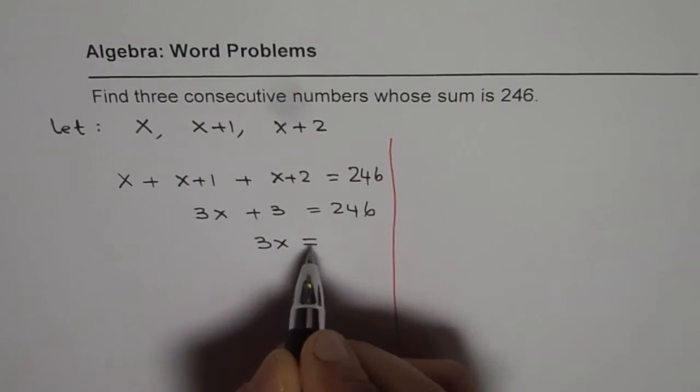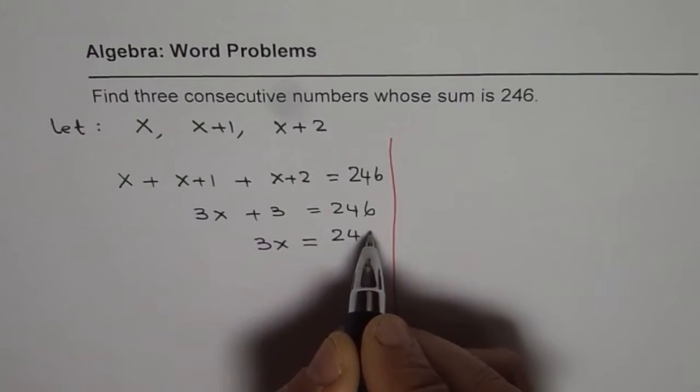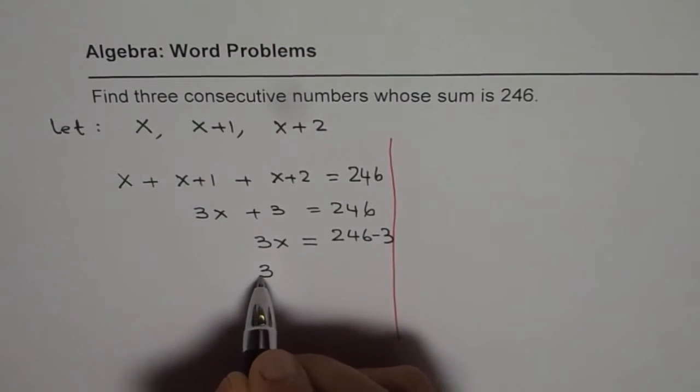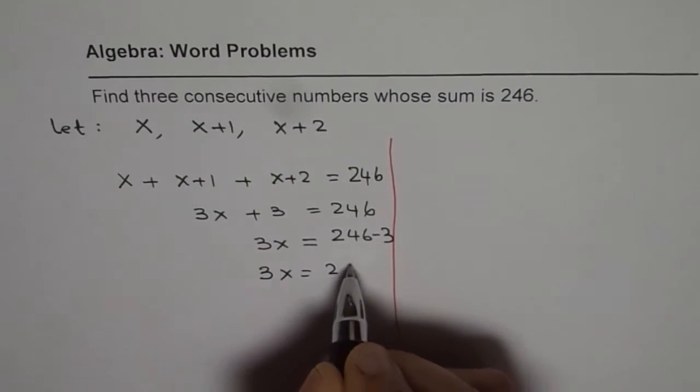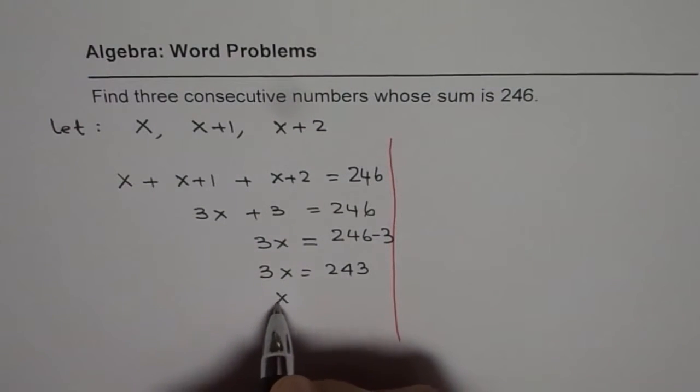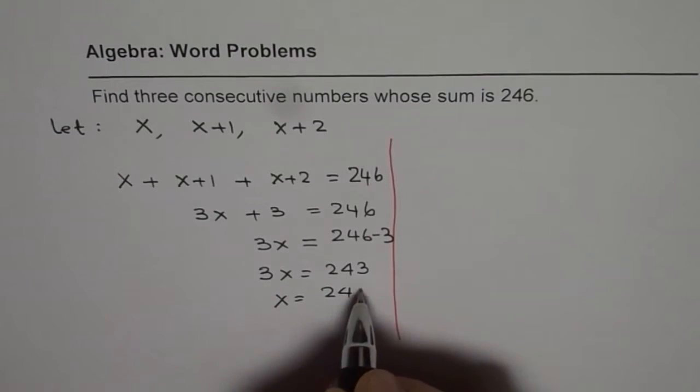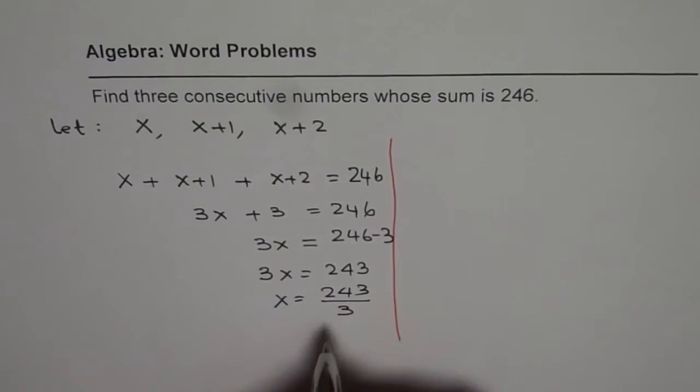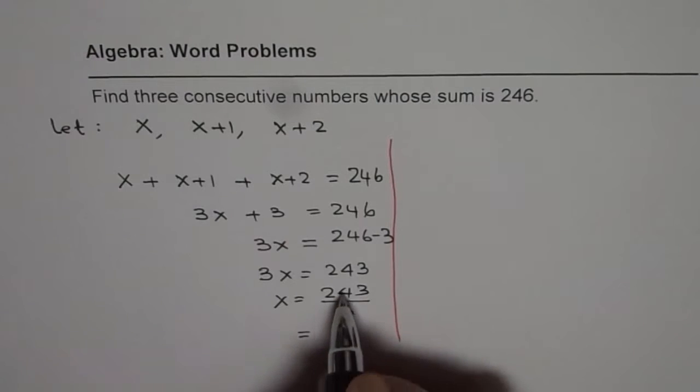So, 3x equals 246 minus 3, or we can say 3x equals 243. So x equals 243 divided by 3, and that gives us 81.